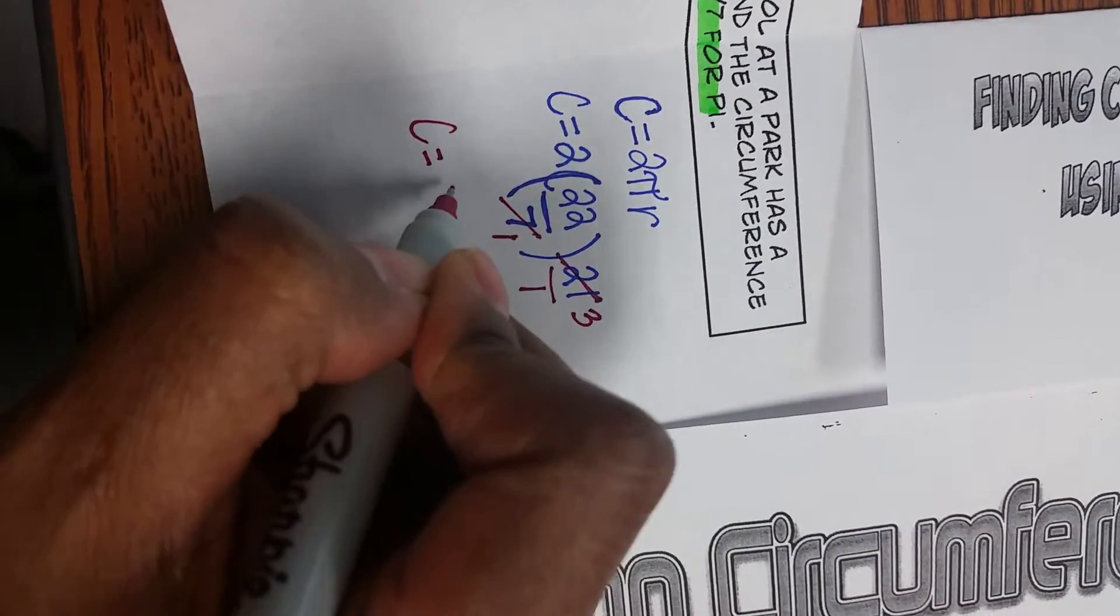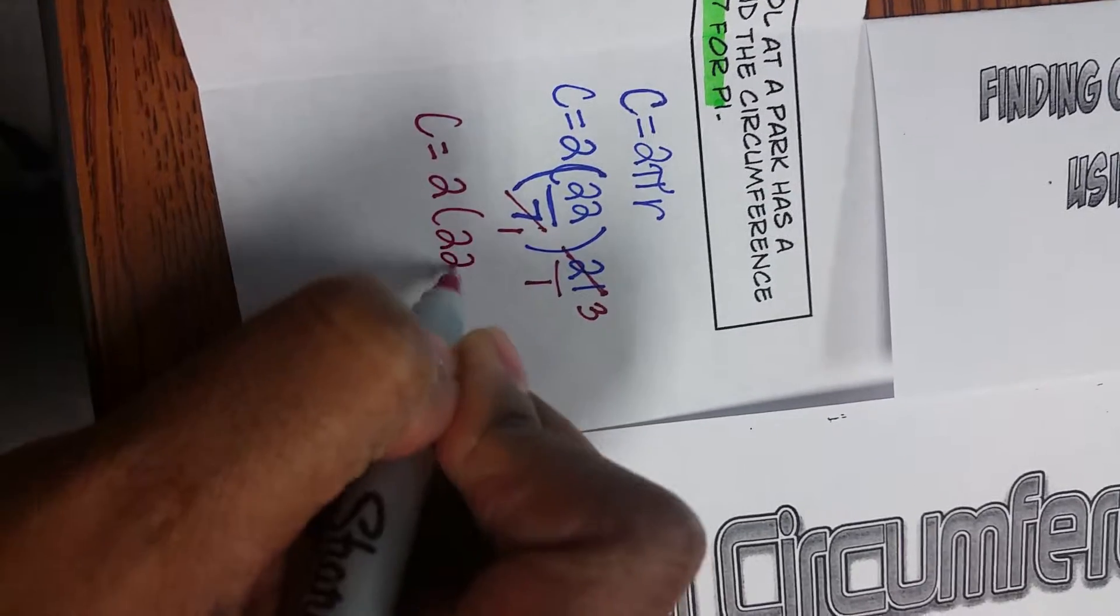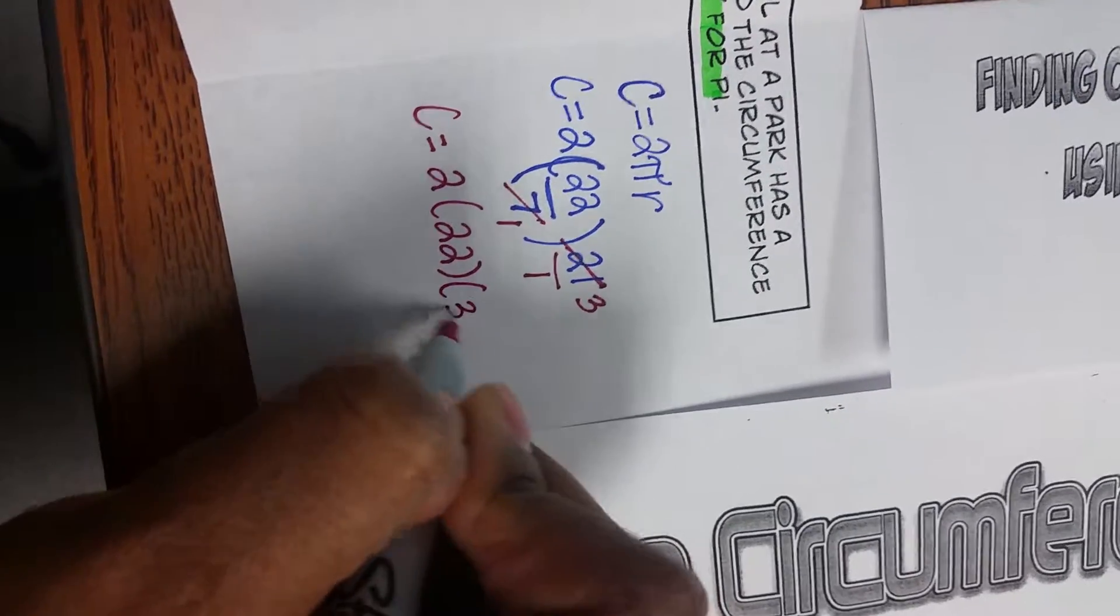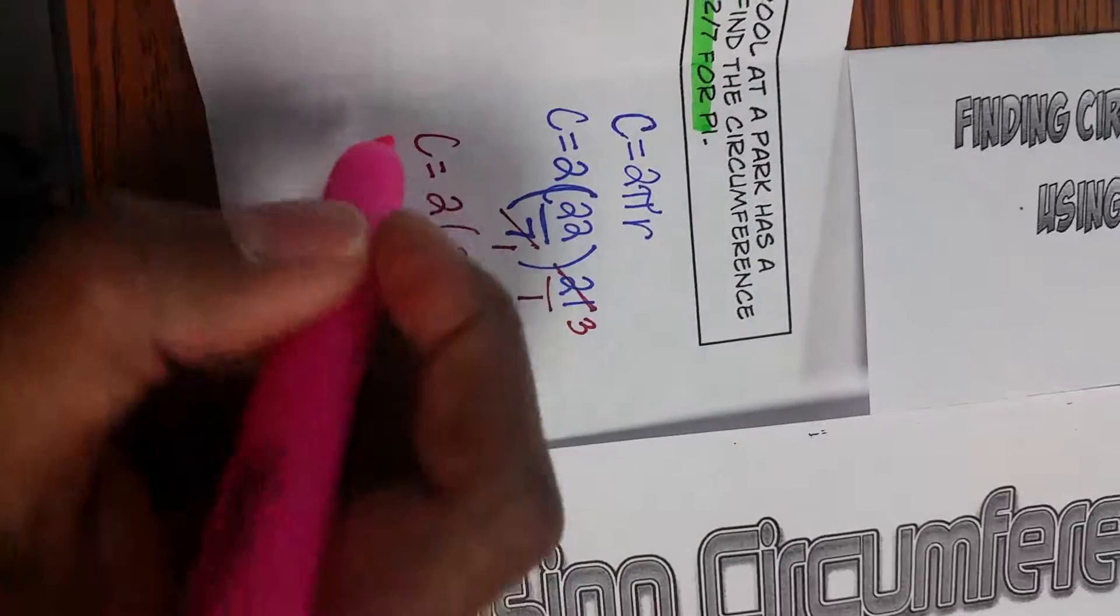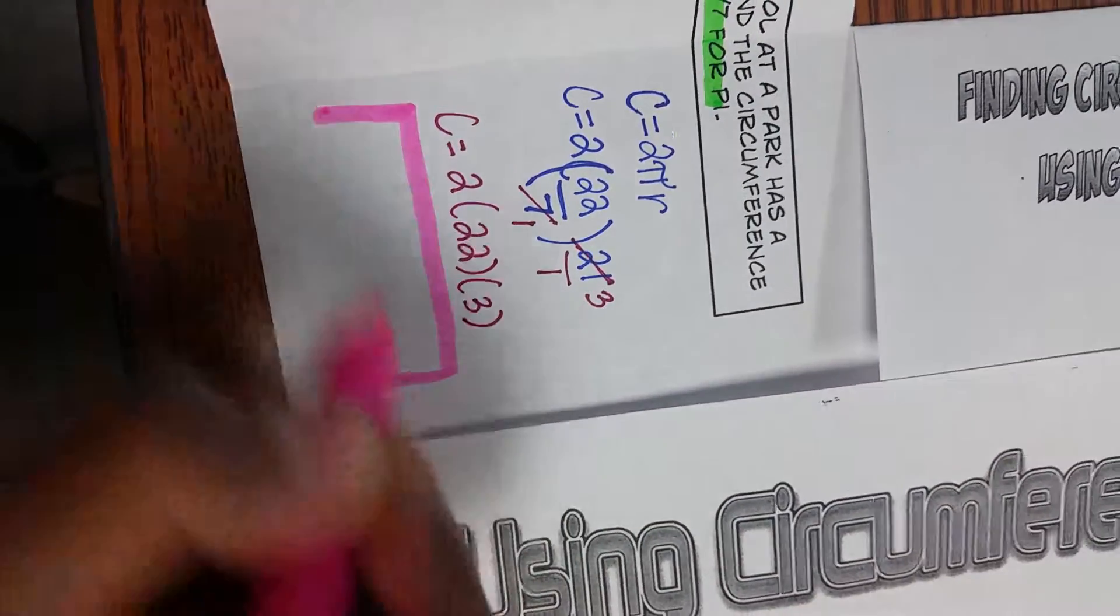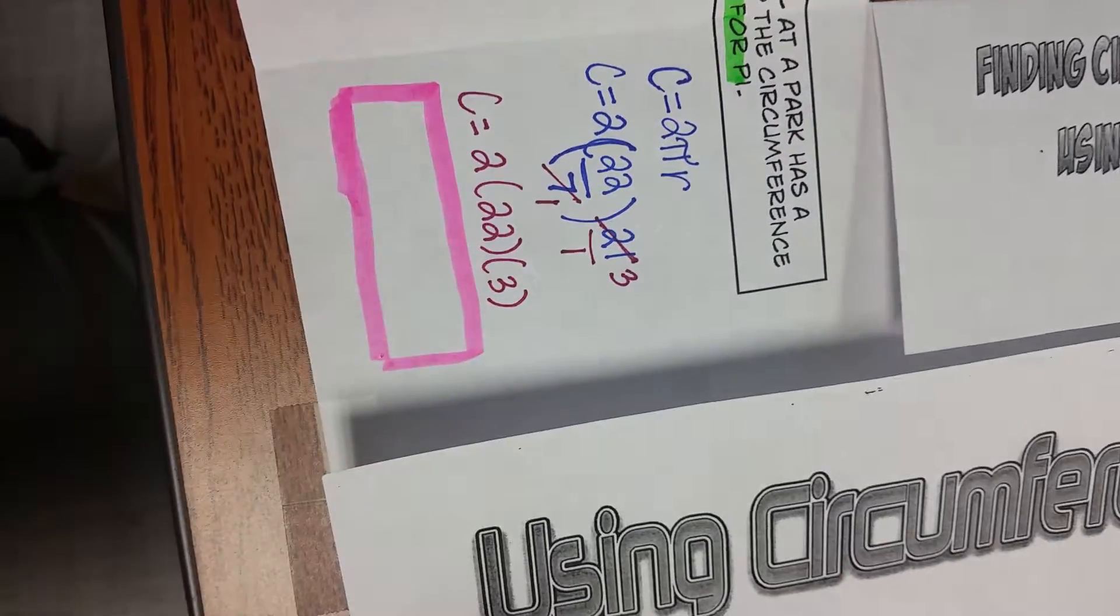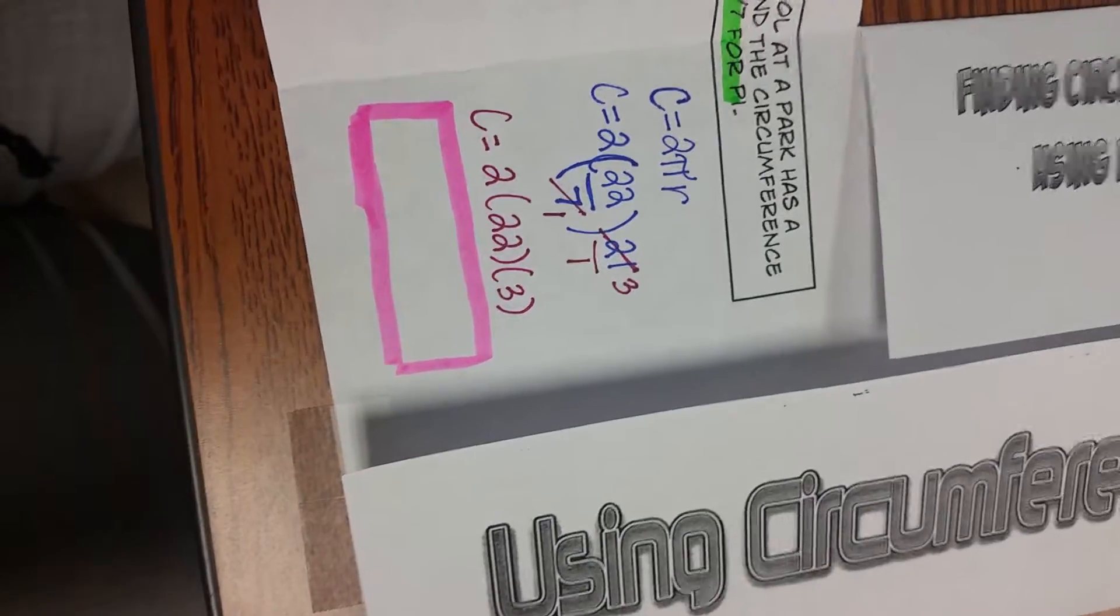So now I have c equals 2 times 22 times 3. Now what I want you to do is I want you to get me an answer here for in class.